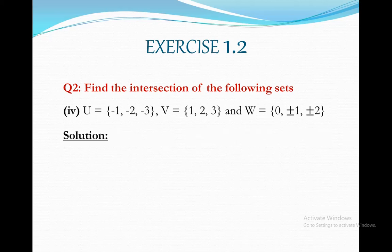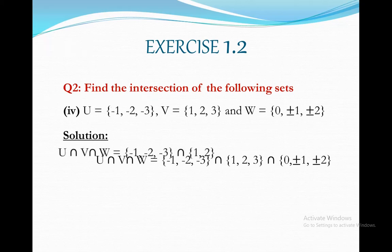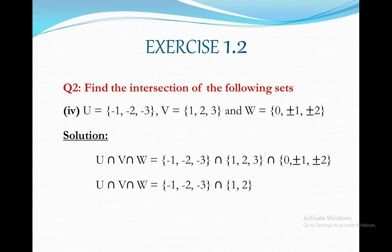Starting our solution. Taking the intersection of all the given sets, we have U ∩ V ∩ W. We will take the intersection of set V and set W first. It is obvious that in set V and set W, only 1 and 2 are the two common elements. So in the next step, we have U ∩ V ∩ W = {-1, -2, -3} ∩ {1, 2}.